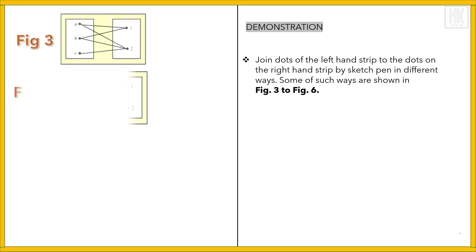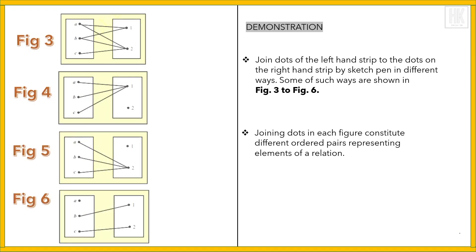This is the third figure, fourth figure, fifth, and sixth. Joining dots in each figure constitutes different ordered pairs representing elements of a relation.